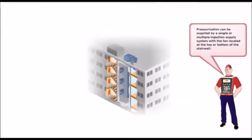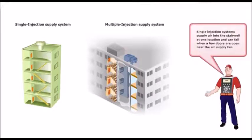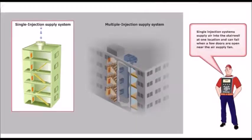Pressurization can be supplied by a single or multiple injection supply system with a fan located at the top or bottom of the stairwell. Single injection systems supply air into the stairwell at one location and can fail when a few doors are open near the air supply fan.